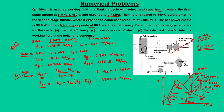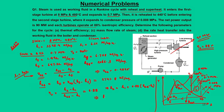To get state 2 actual, we use isentropic efficiency of the turbine: η = (H₂ − H₁)/(H₂s − H₁) = 0.88. Solving: H₂ = H₁ + 0.88 × (H₂s − H₁) = 2814.6 kJ/kg. We now know both state 2 and 2s.